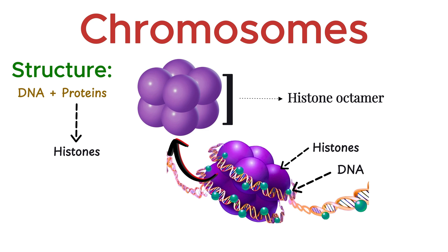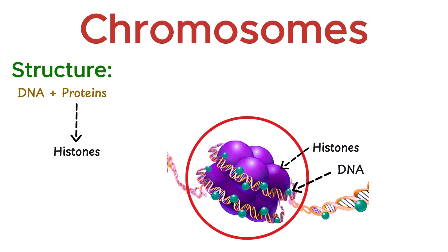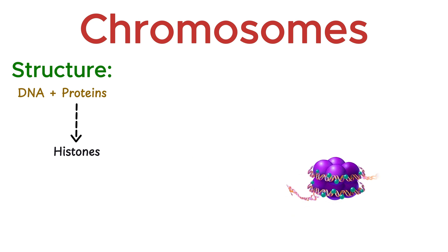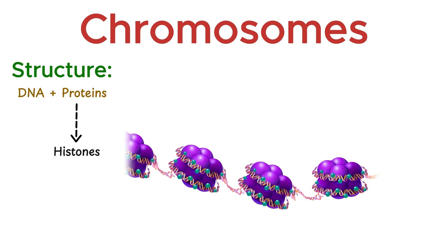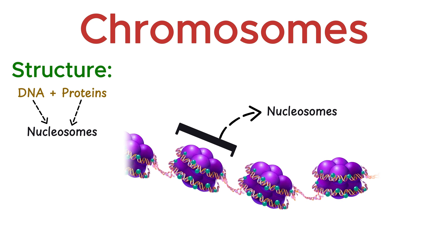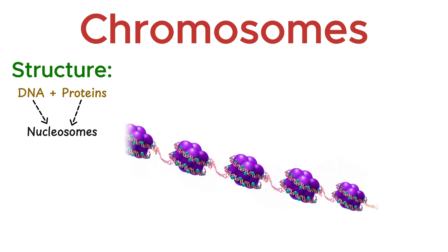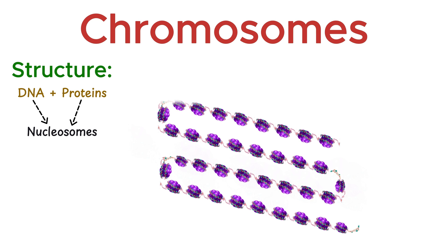Each octamer consists of two copies each of four different histone proteins: H2A, H2B, H3, and H4. This wrapping helps fold and organize the DNA so it doesn't get tangled. This group of histones and the wrapped DNA forms repeating units, and these units are called nucleosomes.